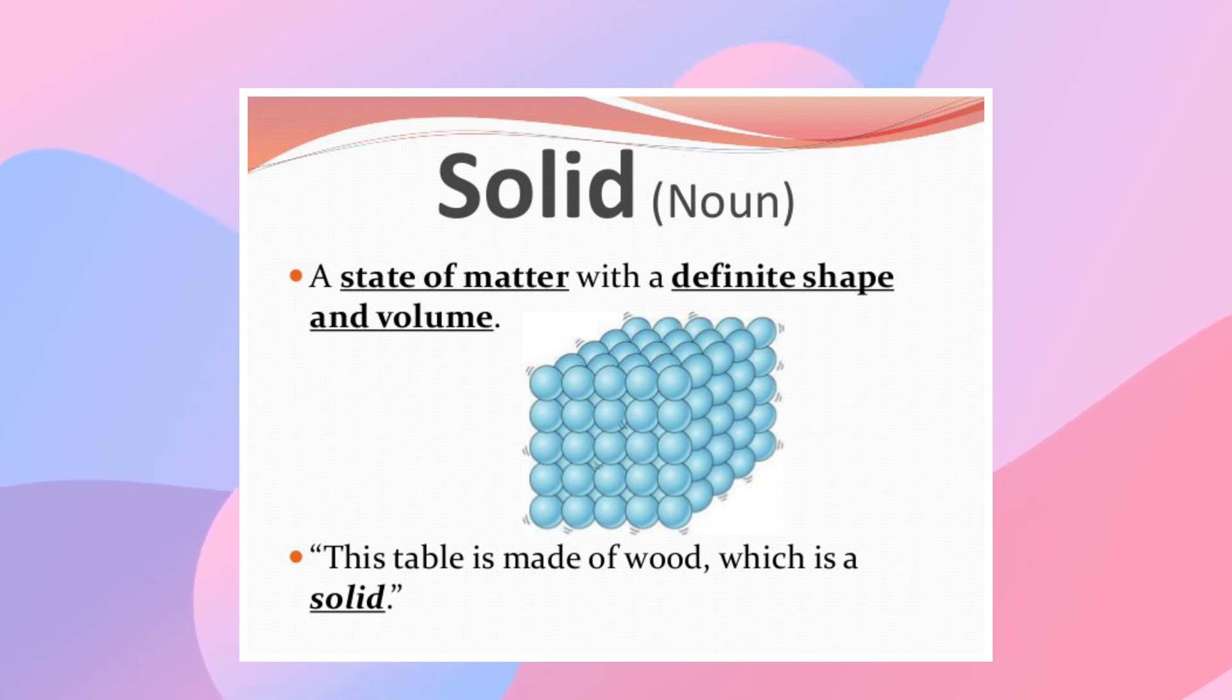There are two kinds of solids, crystalline and amorphous. In crystalline solids the particles are arranged in a repeated, symmetrical pattern, for example, salt, rocks and metals.